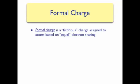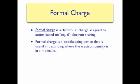What is Formal Charge? Formal charge is a fictitious charge that we assign to each atom in a molecule based on the assumption that all electrons in the molecule are equally shared. This is the exact opposite of oxidation number, which assumes that each atom breaks up into ions. We use formal charge as a bookkeeping device, just like we did for oxidation numbers. Formal charge is very useful in describing where the electron density will be in a molecule, even if we assume that electrons are shared equally.